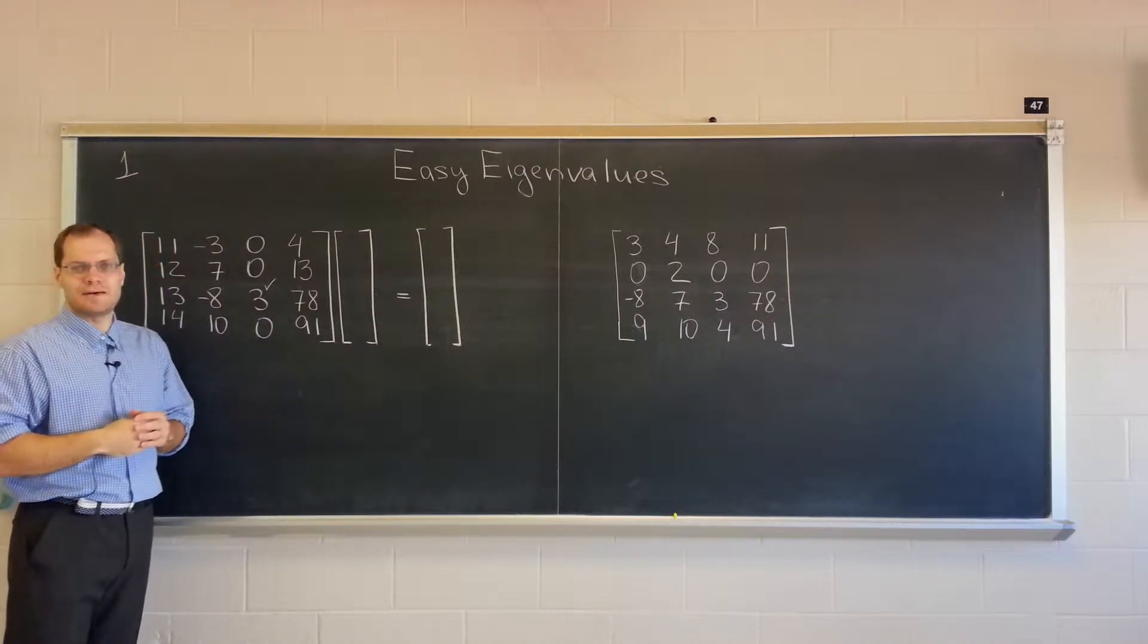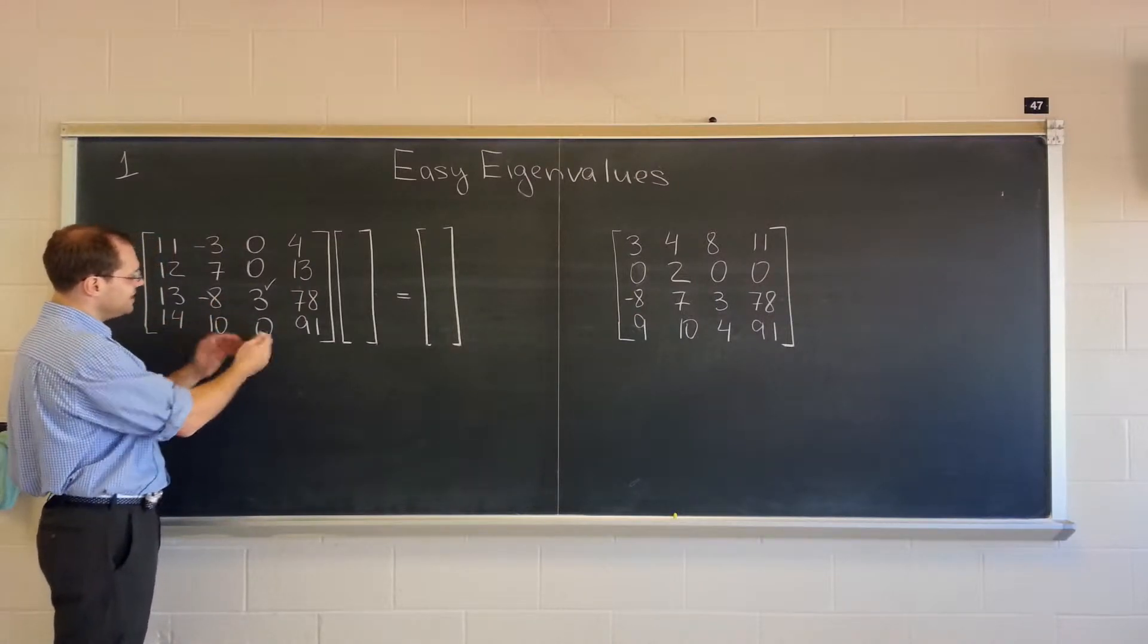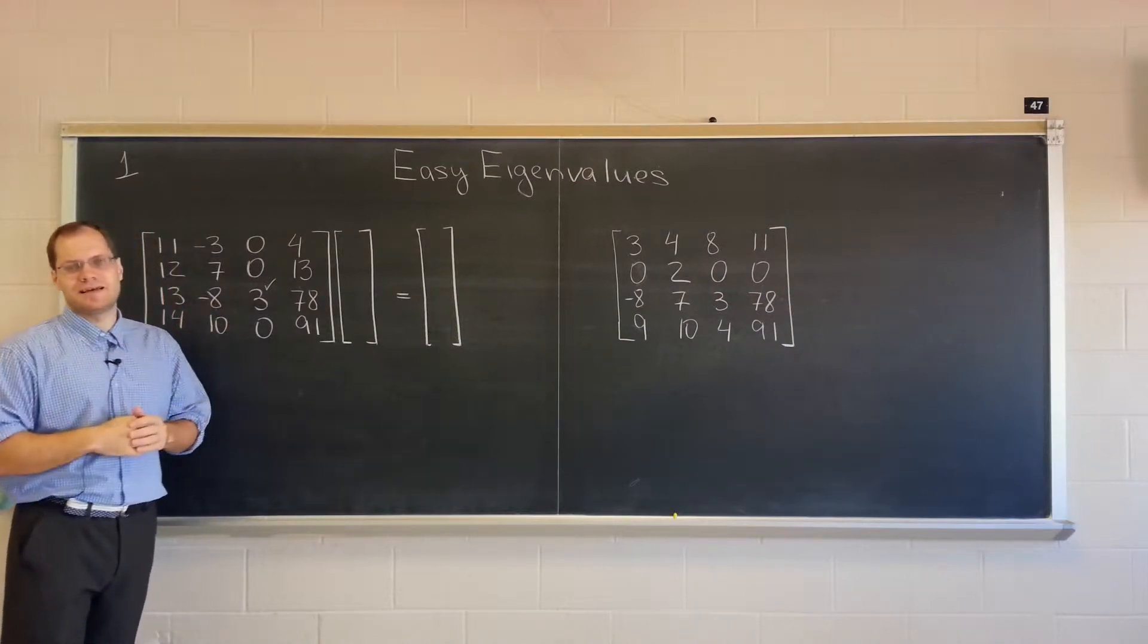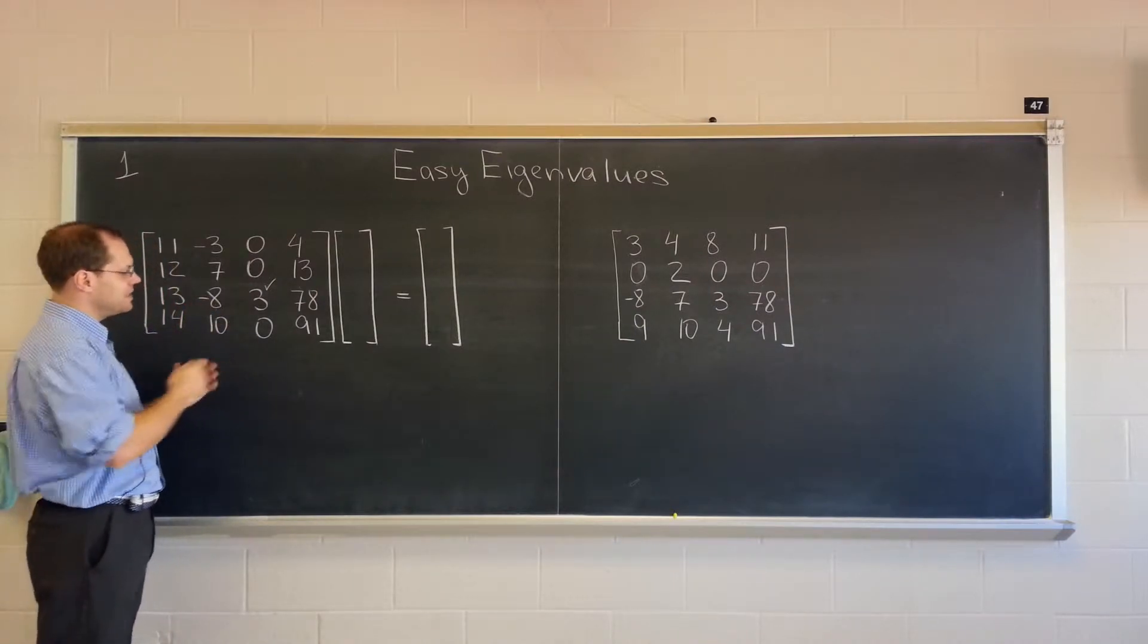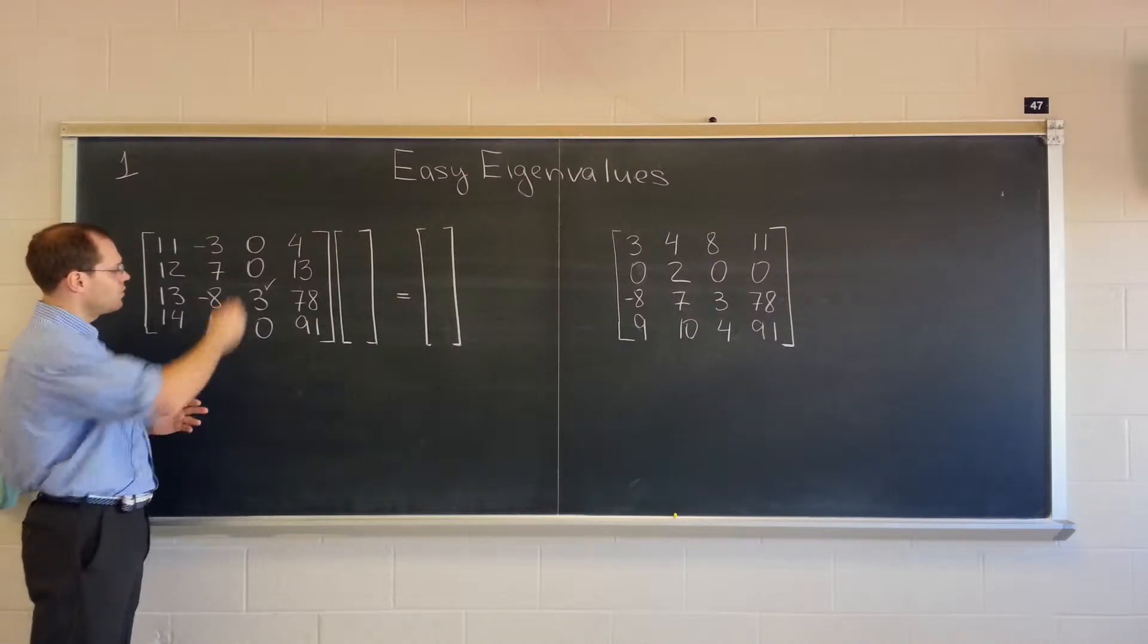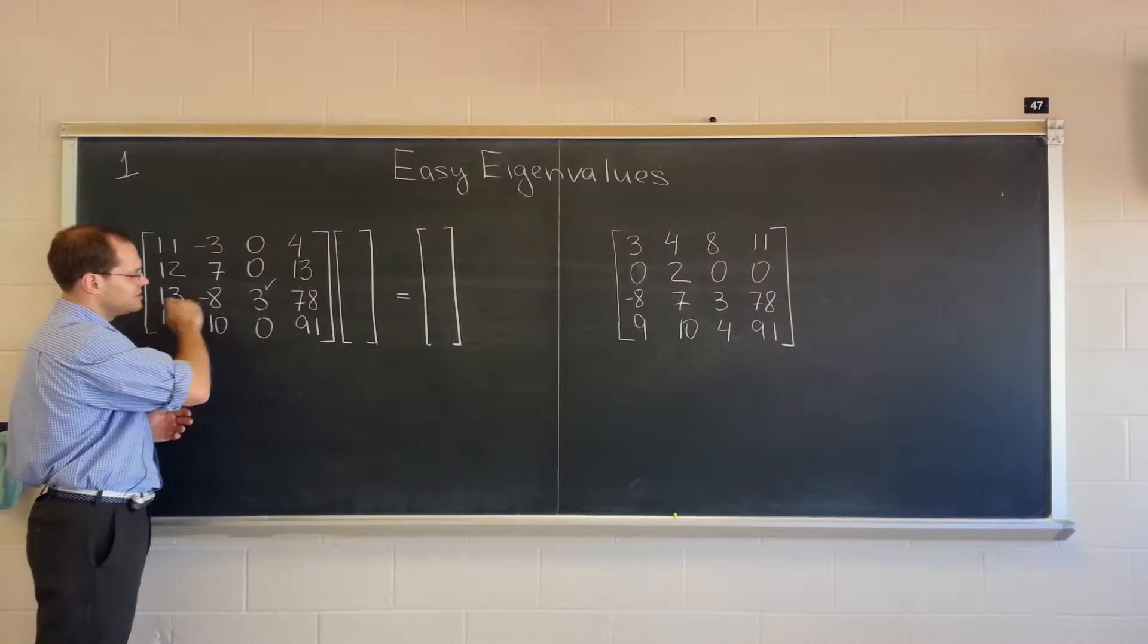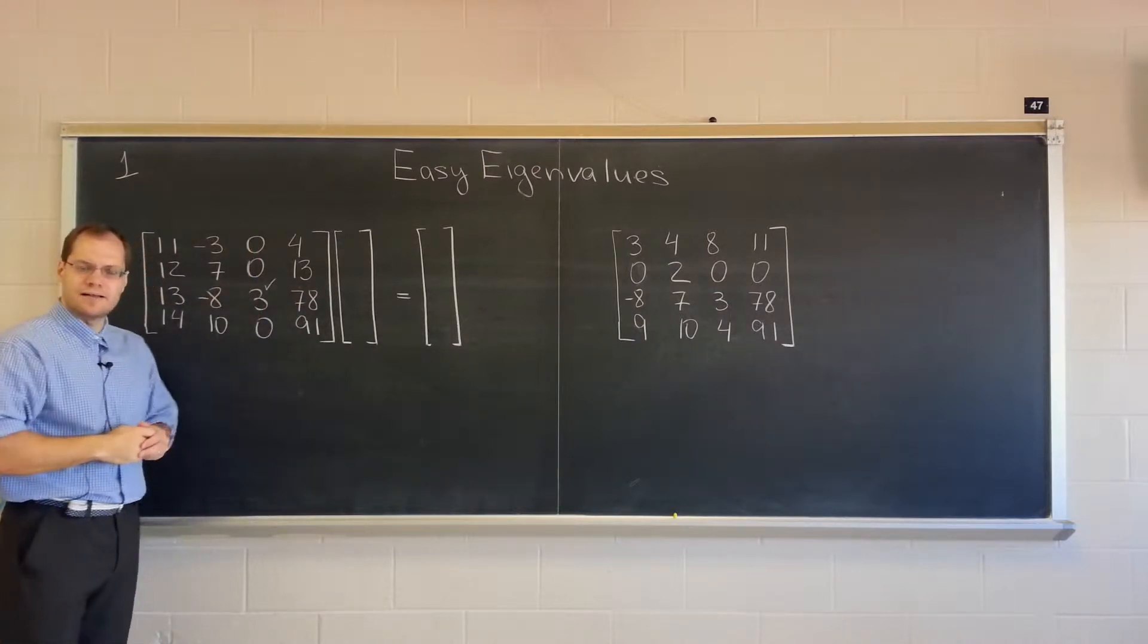We'll see in a moment why. So that's actually a dead giveaway, maybe even the simplest way to see an eigenvalue when a matrix presents this feature. When there's a single non-zero number in a column and it happens to be on the diagonal. In other words, it's in the same row as its column.